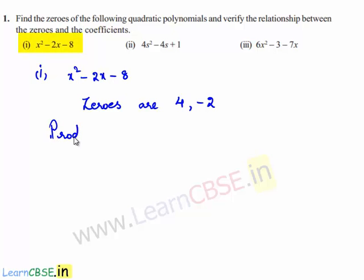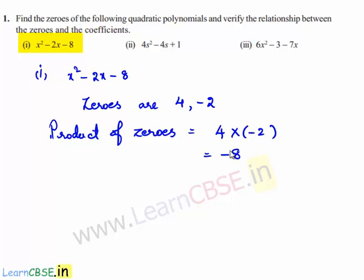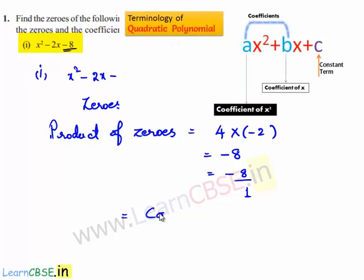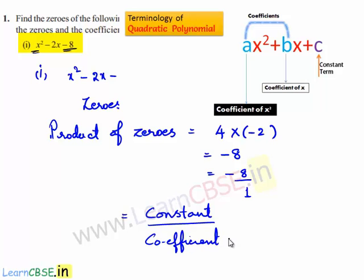The product of the zeros is equal to 4 multiplied by minus 2, which equals minus 8. This minus 8 can be written as minus 8 divided by 1, where minus 8 is the constant term and 1 is the coefficient of x². Therefore, the product of the zeros is equal to the constant term divided by the coefficient of x².